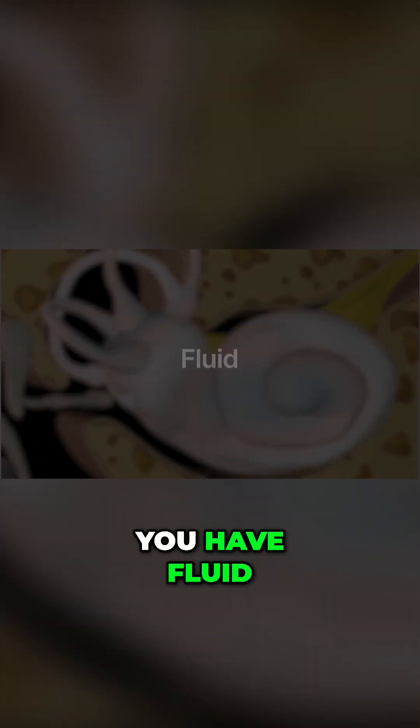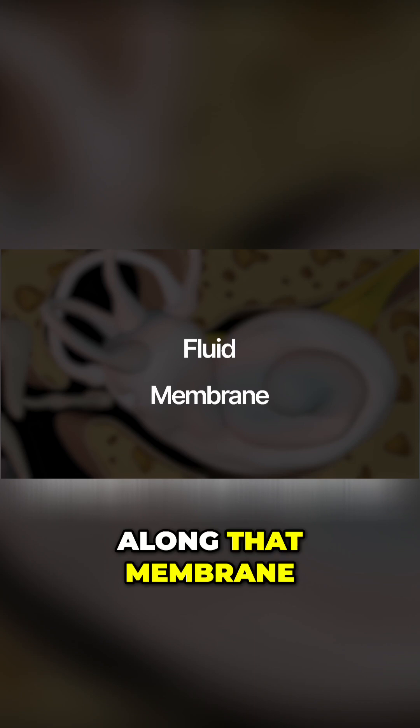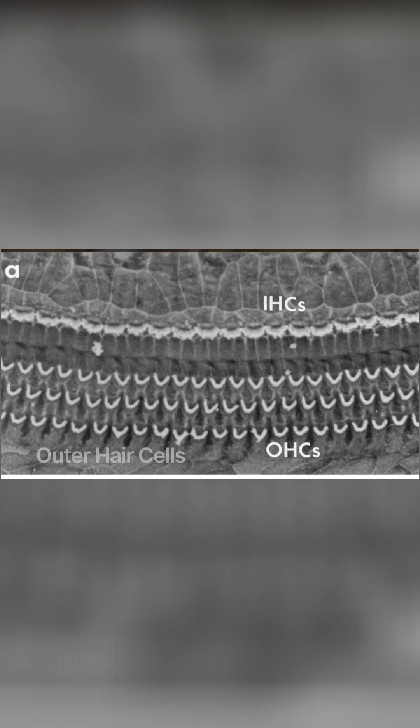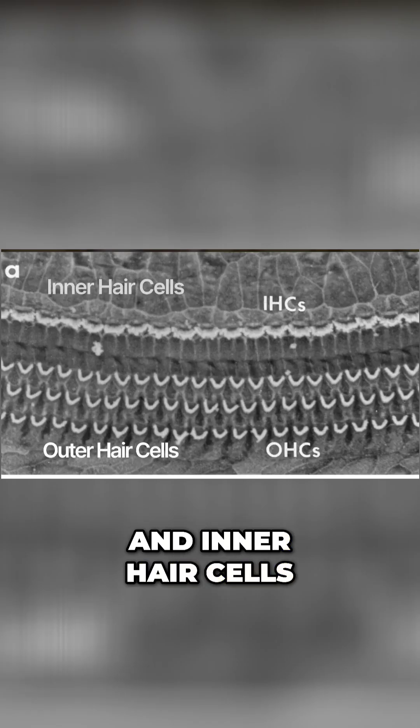Inside of the cochlea you have fluid and a membrane. Along that membrane you have what are called outer hair cells and inner hair cells.